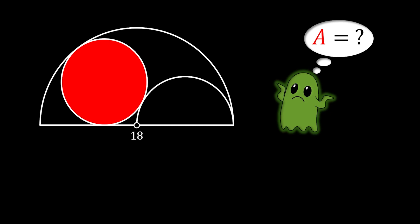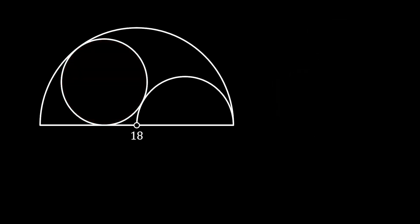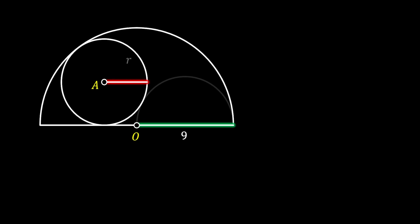Let's solve this one together. We are going to start by labeling the center of our big half circle as O. Then we will also label the center of our inscribed full circle as A. Now let's have a look only at our big half circle and our inscribed circle. Since the diameter is equal to 18, the radius must be equal to 9. Let's label the radius of our inscribed circle as R, and label the intersection point between those two circles as P.